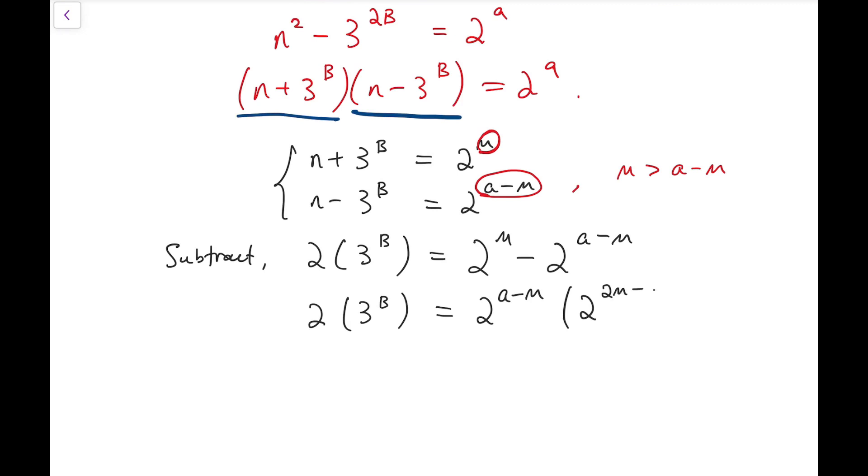after taking out this common factor, we'll have this power multiplied by 2 to the power 2m minus a so that the sum of these two exponents will be m and then minus 1 afterwards.